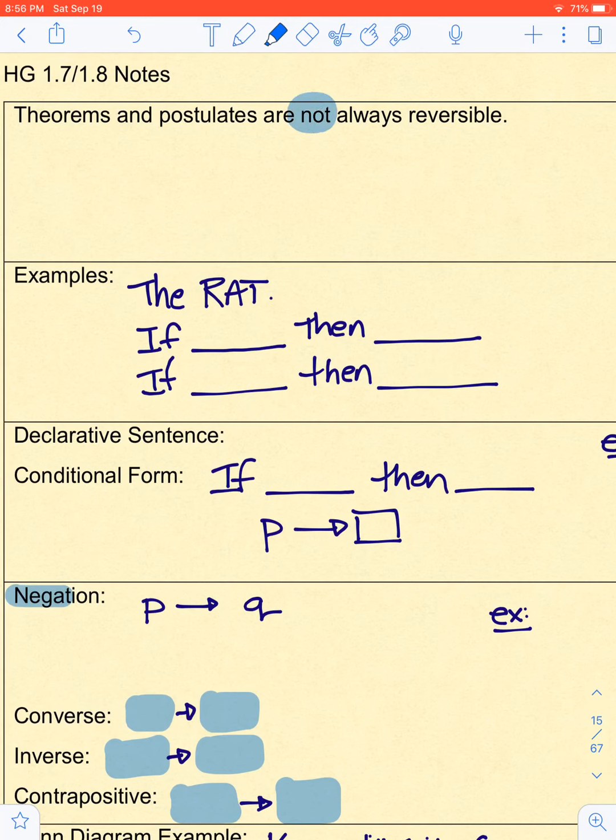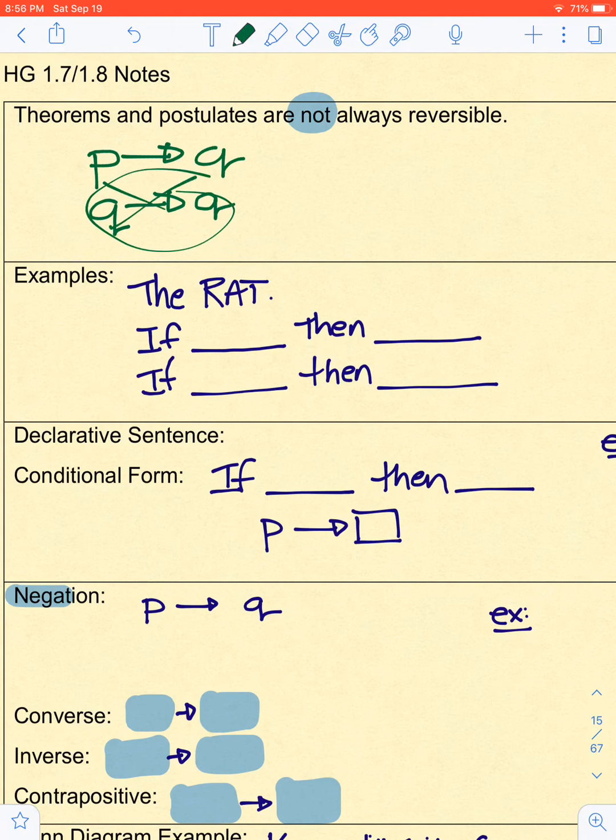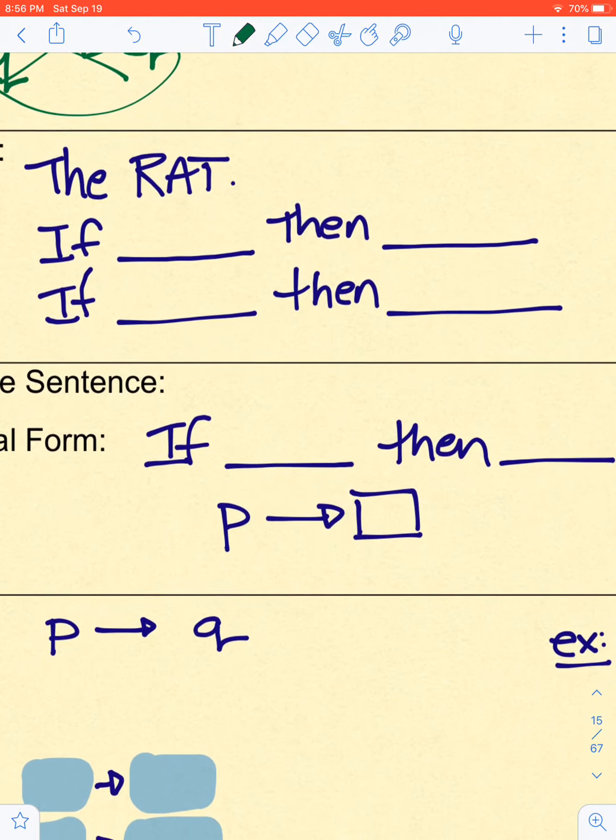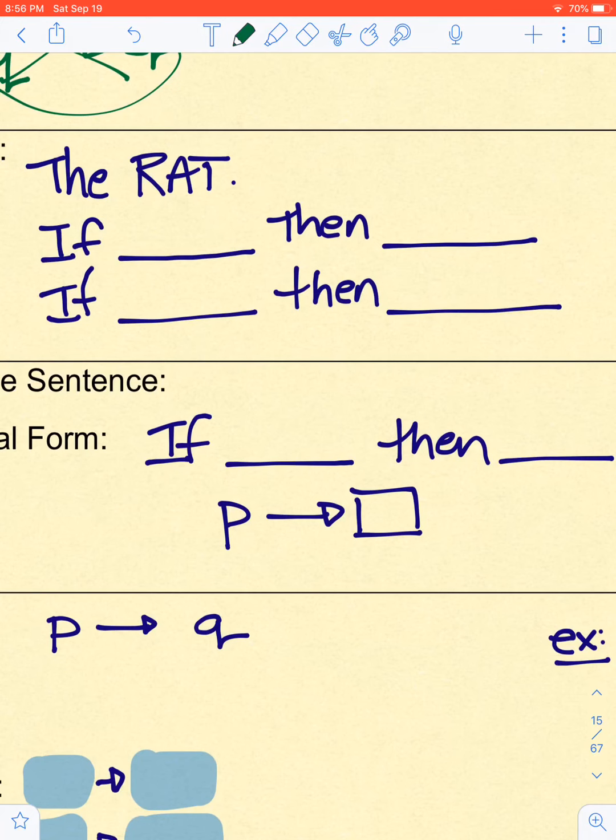The rat. The right angle theorem. If you have two right angles, then they're congruent. Now, if I have two congruent angles, then you have two right angles. Well, we can clearly see that this last statement is false. This is not true. Because you can be other measurements. So, this is a scenario where the converse is false. The regular conditional is true, and it can be proven to be true, and we did.